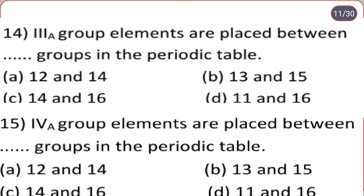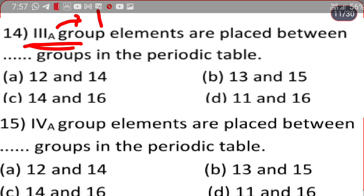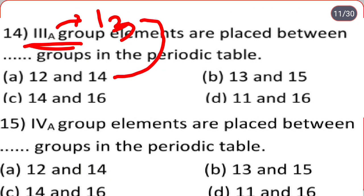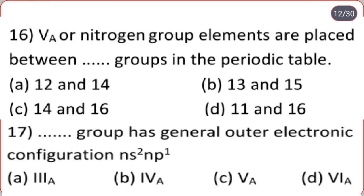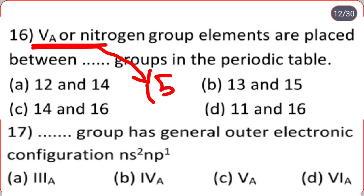3A group elements are placed between groups 12 and 14 in the periodic table — option A. 4A group (group 14) elements are placed between groups 13 and 15 — option B. 5A or nitrogen group (group 15) elements are placed between groups 14 and 16 in the periodic table — option C.